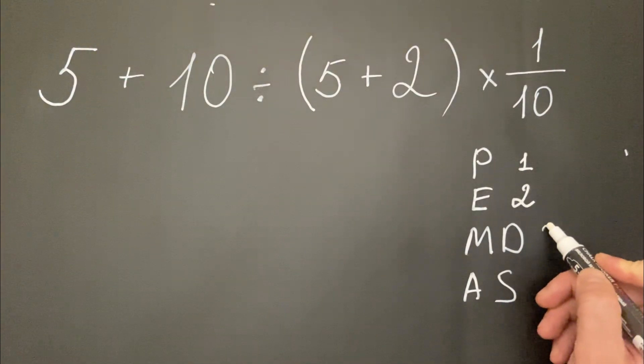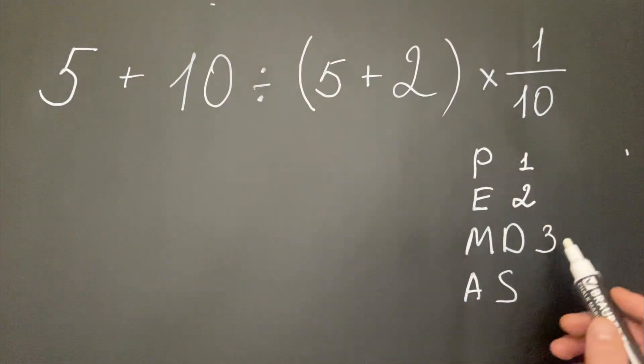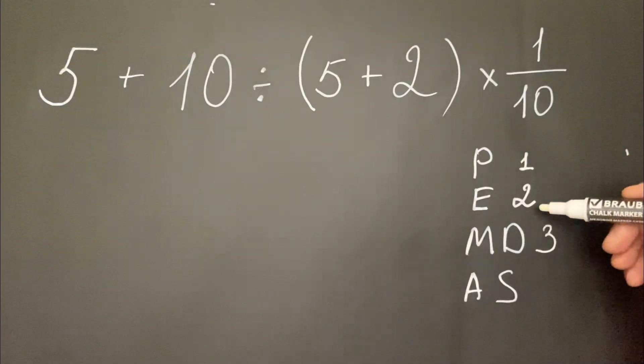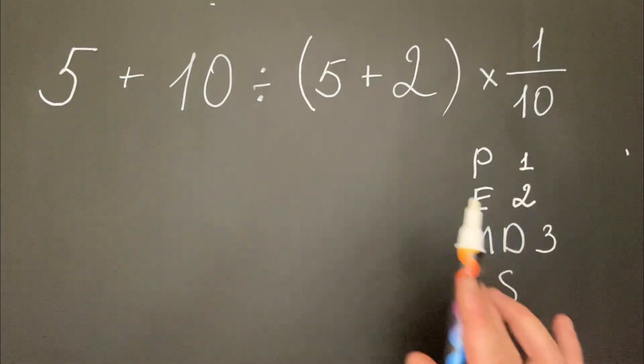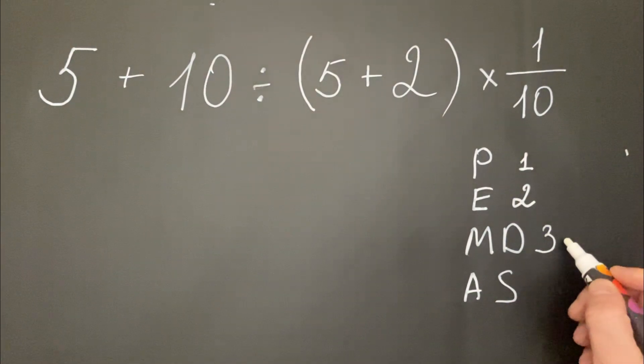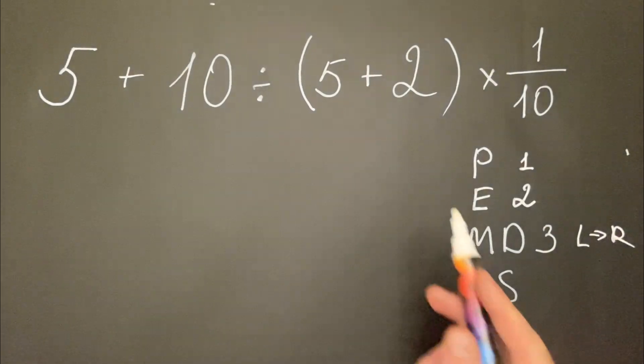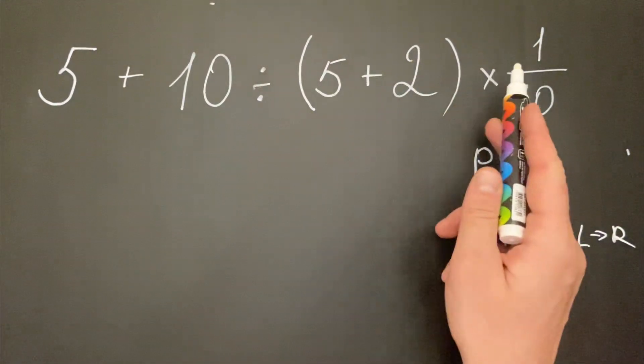When we have multiplication and division, we need to do it third, after parentheses and exponents. But what's important is it must be done from left to right. In this case we have division and multiplication, so we will do first the division, then multiplication from left to right.